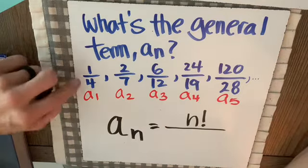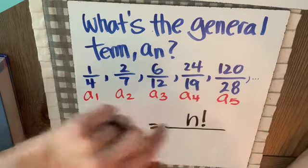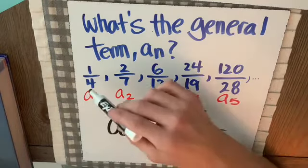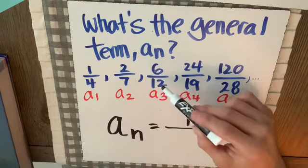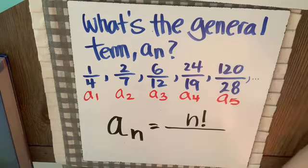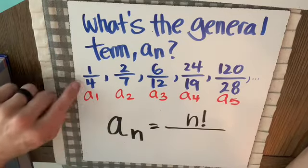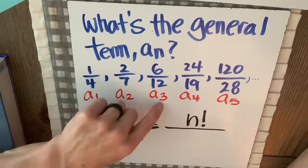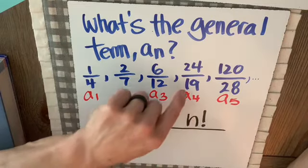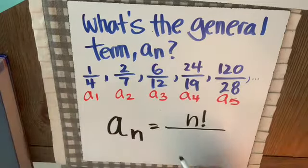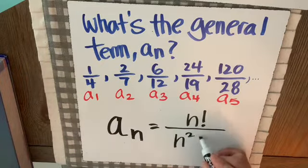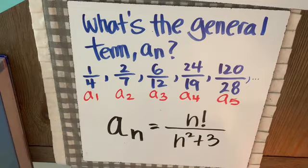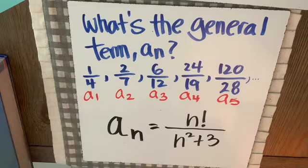Now the denominators: 4, 7, 12, 19, 28. The jumps are 3, then 5, then 7, then 9 — odd numbers increasing. Notice: 1 squared plus 3 is 4, 2 squared plus 3 is 7, 3 squared plus 3 is 12, 4 squared plus 3 is 19, 5 squared plus 3 is 28. So the denominator is n squared plus 3. The general term is aₙ = n factorial over (n² + 3).